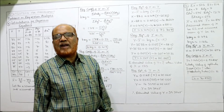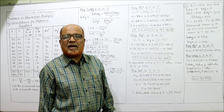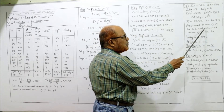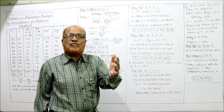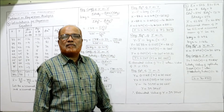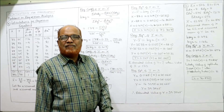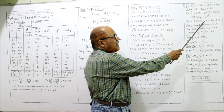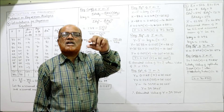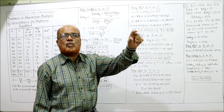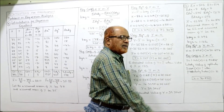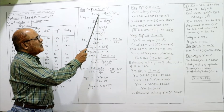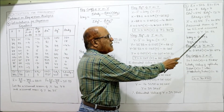Both means are in fraction, so take deviations from assumed mean. Actual mean of x is 62.875, so let assumed mean of x be 62; actual mean of y is 64.875, so assumed mean of y be 64 — both are very near to the actual means. Draw the columns dx, dy, dx², dy², dx·dy and get all the totals. Applying the bxy formula, substituting all values, you get bxy = 0.496.